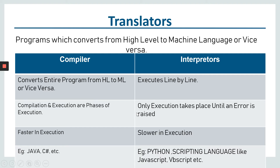Programs which convert from high-level to machine language or vice versa are called translators, and there are two types: compiler and interpreter. An interpreter executes code line by line — only execution takes place. It is slower in execution compared to a compiler. Examples include Python and scripting languages like JavaScript, VBScript, and many more.